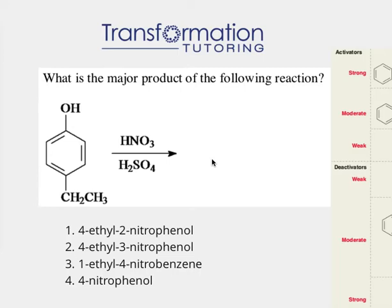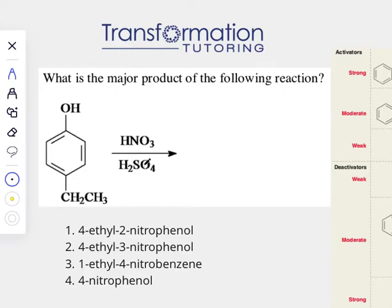This is the major product of the following reaction. First of all, what kind of reaction do we have here? We see a benzene ring and we see the reagent HNO3/H2SO4. This reaction is called nitration and it is specific for the benzene ring — it adds an NO2 group on the benzene ring.